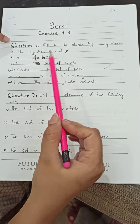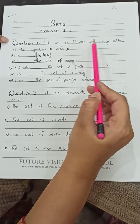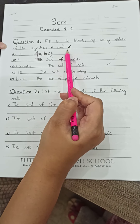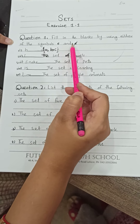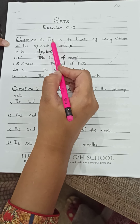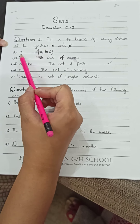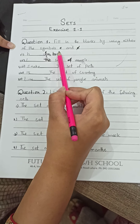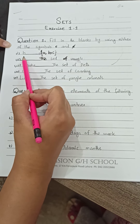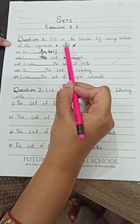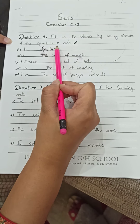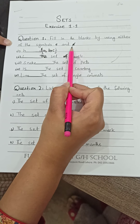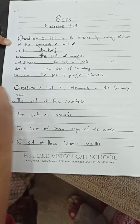Now we have question number 1: fill in the blanks by using either the symbol of element (∈) or not an element (∉). These signs are used to tell whether a given object is an element of a set or not.